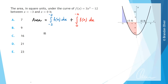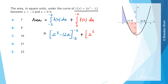The area equals the anti-derivative. Looking at f(x) = 3x² - 12, we anti-differentiate: 3x² becomes x³ (the 3s cancel), and -12 becomes -12x. So we evaluate [x³ - 12x] between -3 and -2 for the blue region, then add [x³ - 12x] evaluated between 0 and -2 for the red region, with swapped terminals to get a positive value.